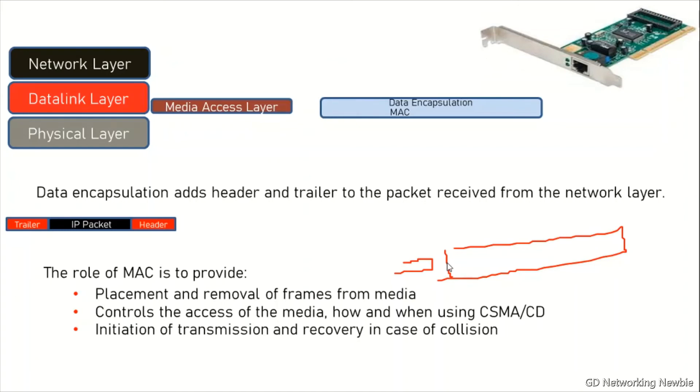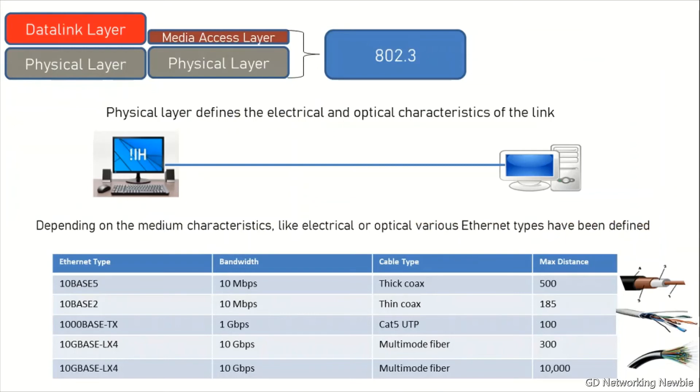802.3 covering the physical layer and the media access layer defines the electrical and optical characteristics of the link. Depending on the medium - whatever medium we are using, maybe coaxial cable, maybe UTP, sometimes optical fiber - which media is actually being used to carry the signals from one point to another.